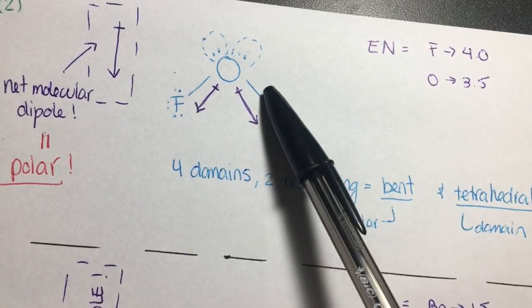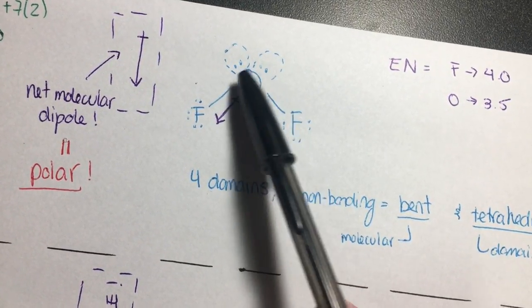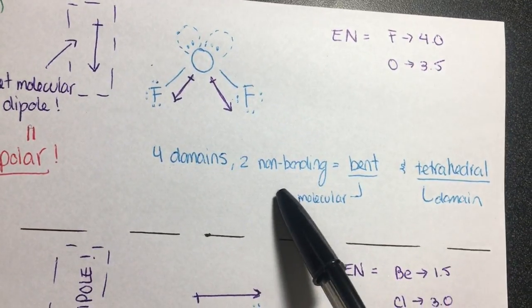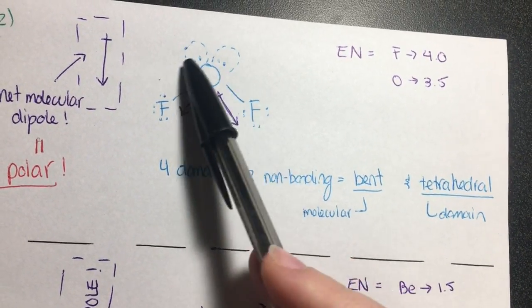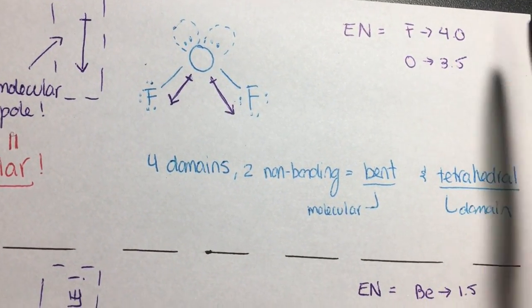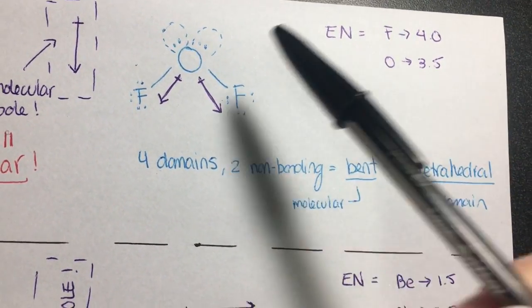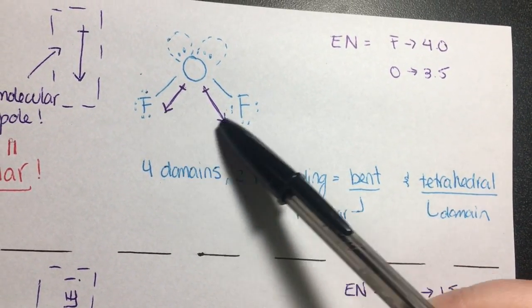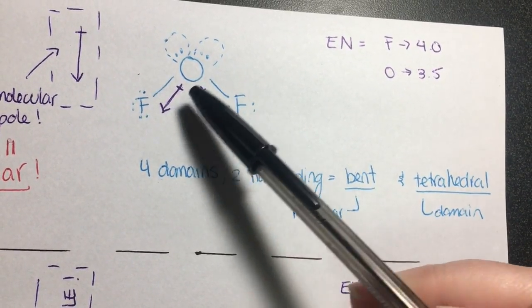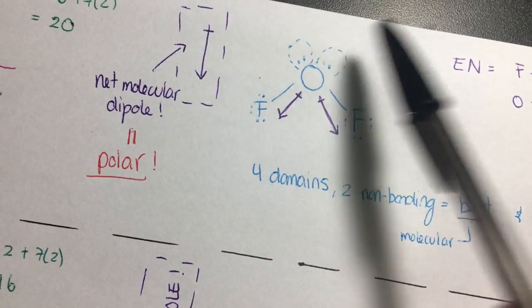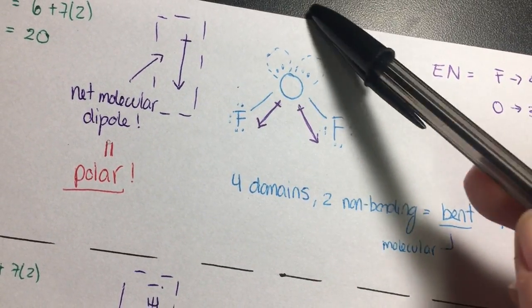Now we figure out the geometry. There are four domains because of the non-bonding pairs, so the domain geometry is tetrahedral. But since we have two non-bonding pairs, the molecular geometry is bent. Fluorine is the most electronegative atom, and oxygen is less electronegative, so oxygen is on the positive end of the dipole and fluorine is on the negative end. We have two dipoles pointing down with nothing to cancel them out, so the net molecular dipole points down.